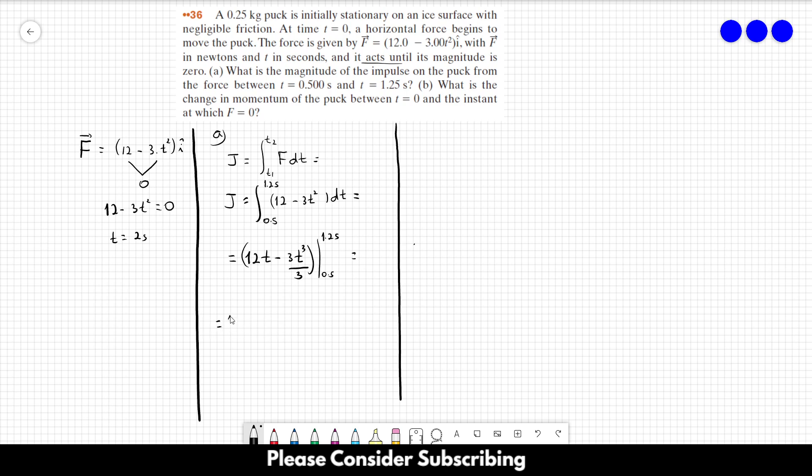This is equal to 12 times 1.25 minus 3. We can cross this out. So, 1.25 to the power of 3, and this is minus 12 times 0.5 minus 0.5 to the power of 3.